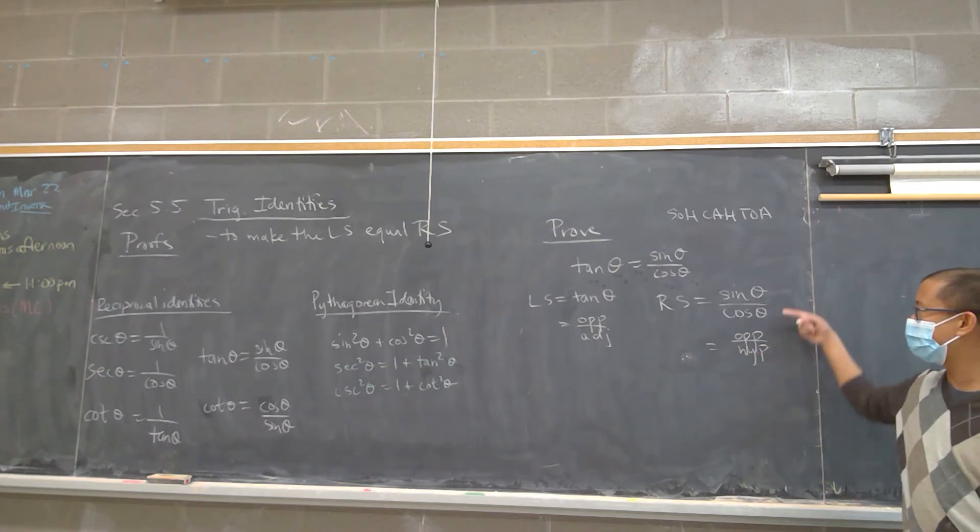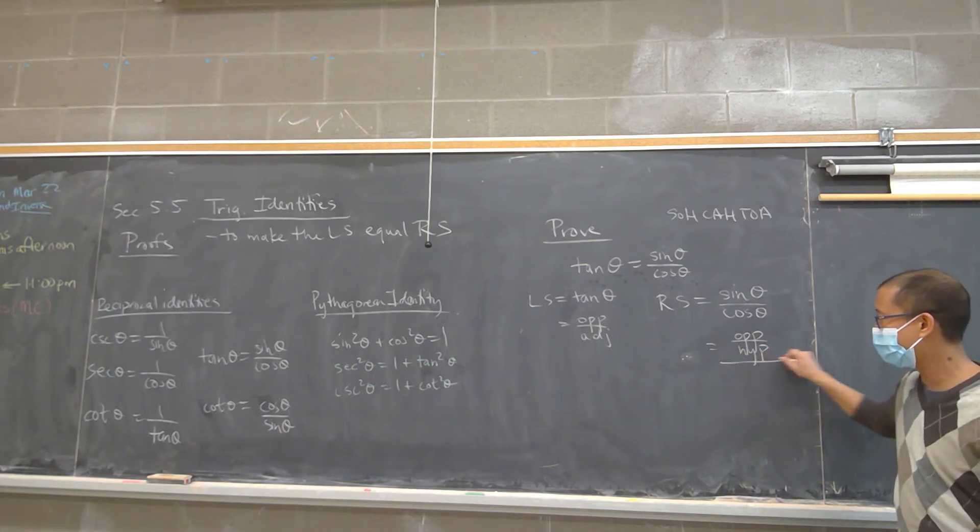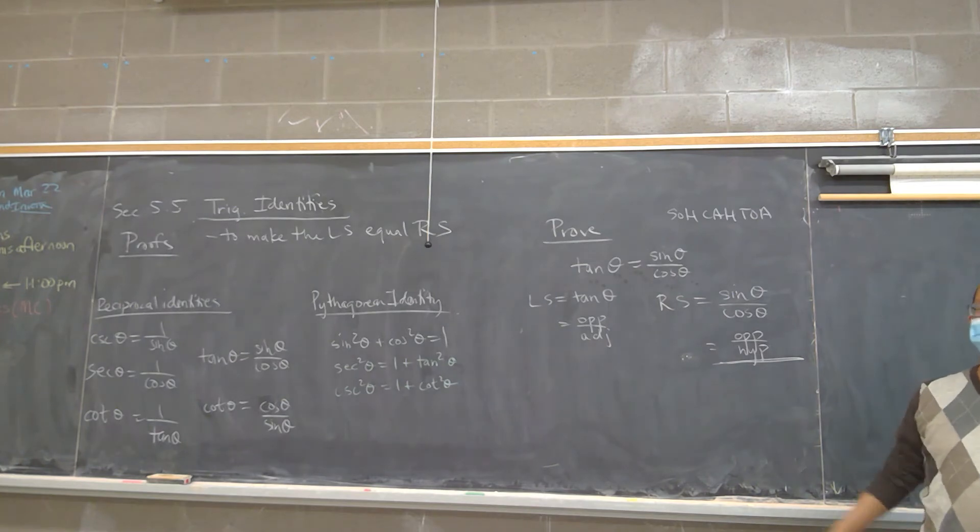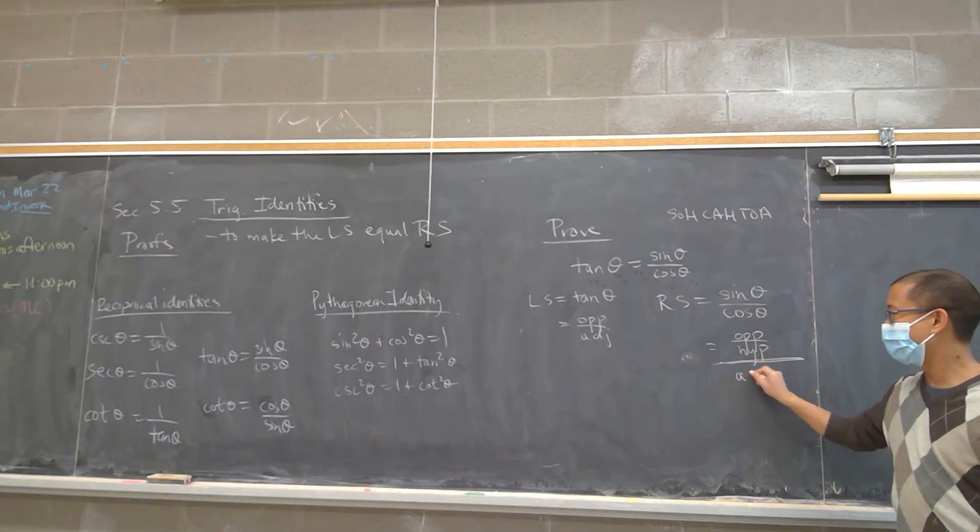This line is this. Can I get a different volunteer? What is cosine as a definition? Nora? Adjacent over that line. Nicely done. Now some say...